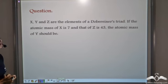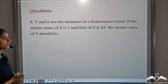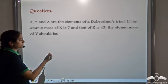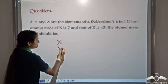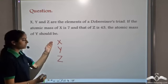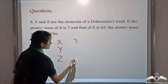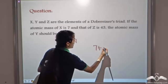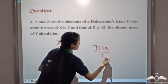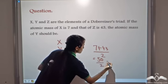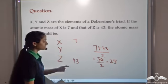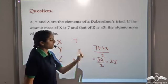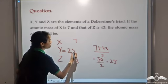X, Y, and Z are the elements of a Döbereiner's triad. If the atomic mass of X is 7 and that of Z is 43, the atomic mass of Y should be — well, Döbereiner's law of triads states that when three elements belonging to a triad are arranged in increasing order of atomic masses, the average of the first and the third element equals the atomic mass of the middle element. In this case, the average comes out to be 25. So the atomic mass of Y should be 25.